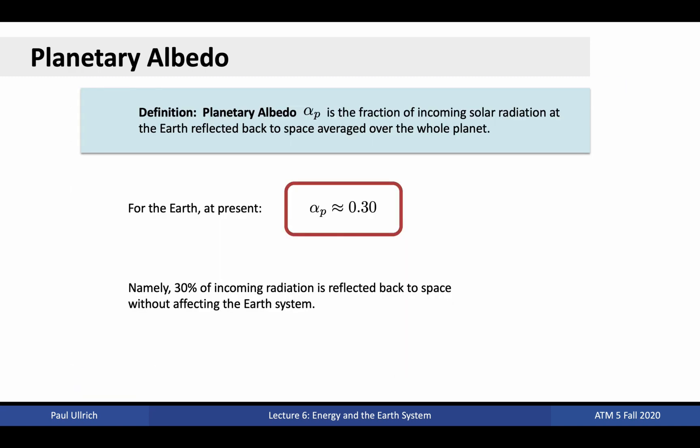If we average the albedo over the whole planet, we obtain what is known as the planetary albedo. That is, the fraction of solar radiation that is reflected back to space and doesn't play a role in energy exchanges in the earth system. It turns out that for earth, this is around 30 percent, or 0.3.